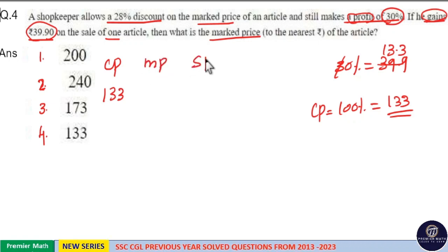Gain is ₹39.90, which means 133 plus 39.9 rupees is selling price. Cost price plus profit is selling price. 133 plus 40 is 173, so 173 minus 0.1 is ₹172.90.